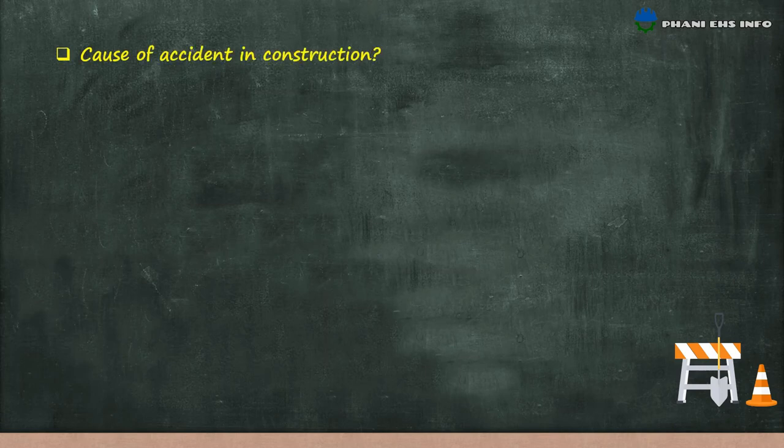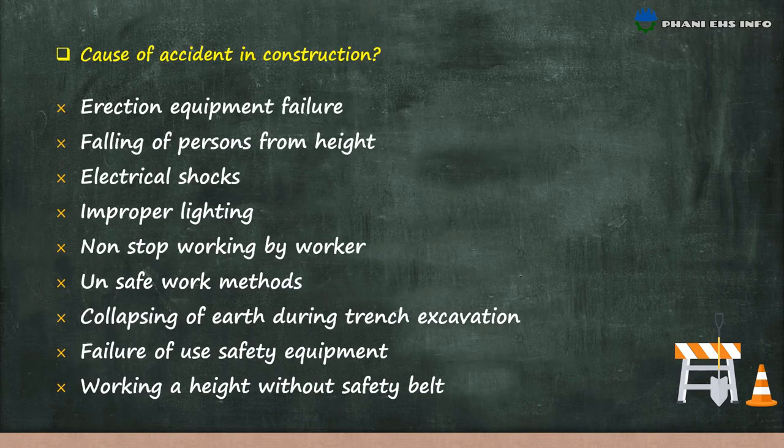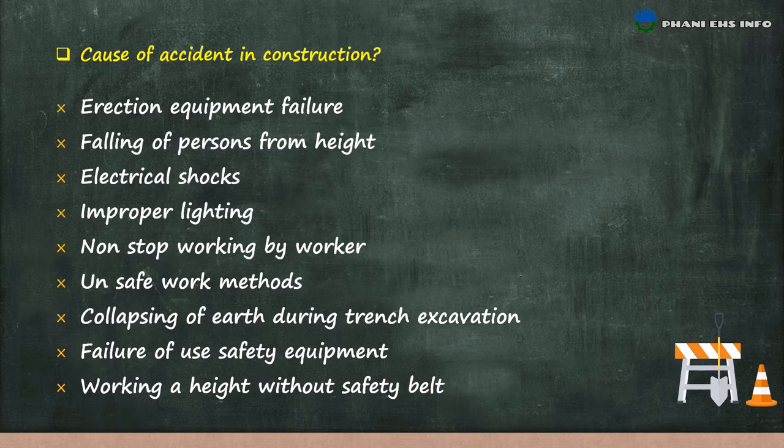Causes of accidents in construction: erection equipment failure; falling of a person from height; electrical shocks; improper lighting; non-stop working by workers; unsafe work methods; collapse of earth during trench excavation; failure to use safety equipment; and working at height without a safety belt.